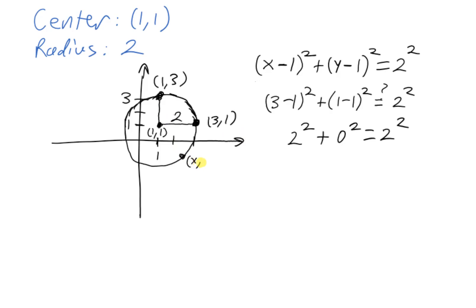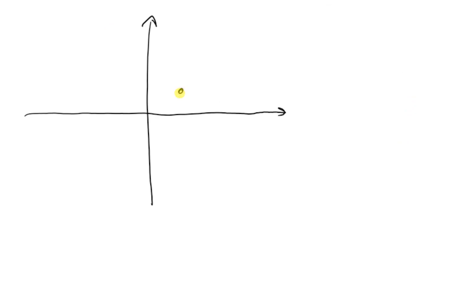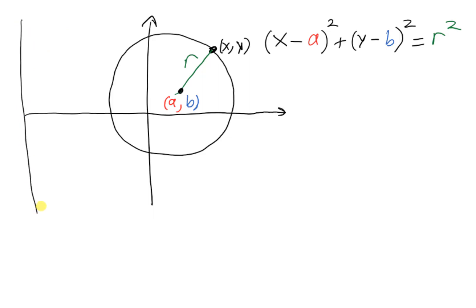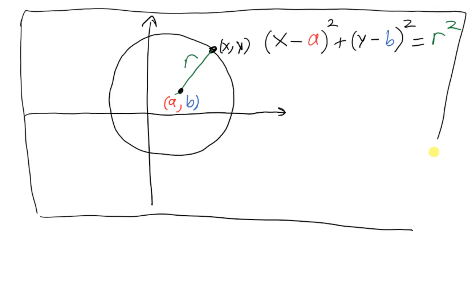In fact, any x-y pair that lies on this circle is going to satisfy this equation. So let's put down the general form. In general, if I have any circle centered at x-coordinate a and y-coordinate b with a radius of length r, then the equation of the circle is (x minus a) squared plus (y minus b) squared equals r squared. This is a key fact you want to memorize — it's the general form of the equation of a circle in the xy-plane.